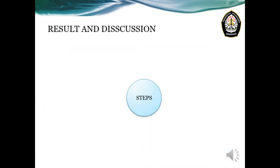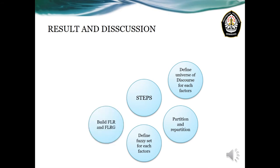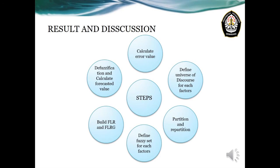In the results and discussion section, we will discuss the step-by-step process of the method. The overview of steps is: first, we define the universe of discourse for each factor; second, we partition using average-based interval and frequency-density-based partitioning; third, we define fuzzy sets for each factor; fourth, we build fuzzy logical relationships and fuzzy logical relationship groups; then we defuzzify and calculate the forecast values; and finally we calculate the error value.